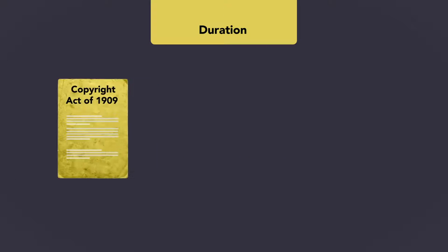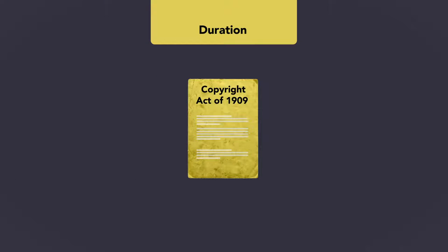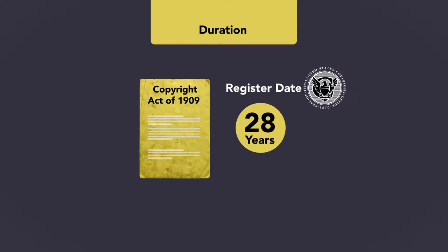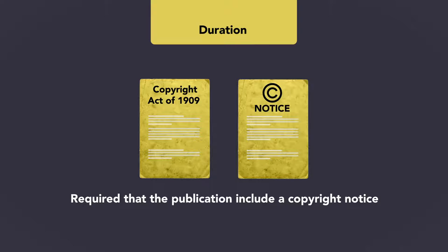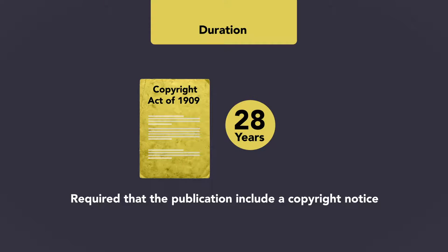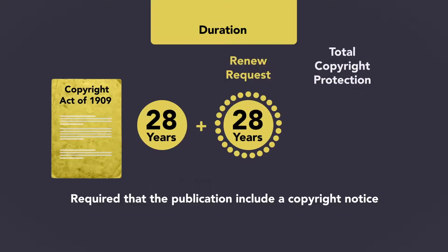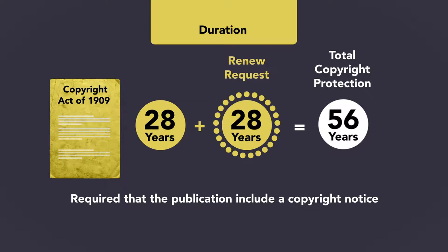Under the Copyright Act of 1909, copyright protection lasted for 28 years from the date when the work was first published or first registered with the Copyright Office. The law at that time required that the publication include a copyright notice, or it was not deemed to be an effective publication. The 28-year term could be renewed with a timely request for an additional 28-year term. Thus, under the Copyright Act of 1909, the maximum time for which a work could receive copyright protection was 56 years.